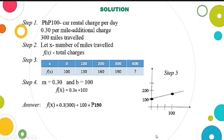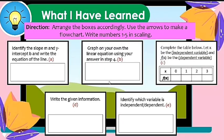So for the graph, this is our graph. Here on the X axis is our number of miles. Here on our Y axis is the charges or amount needed to pay.